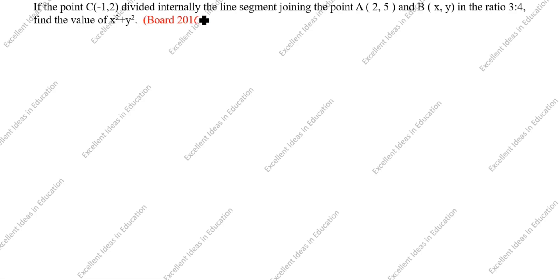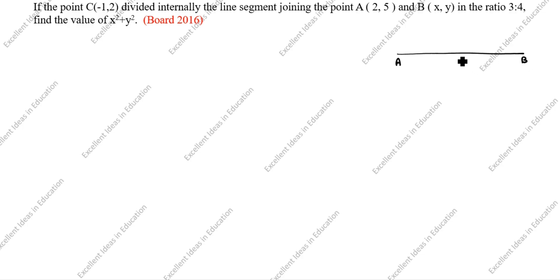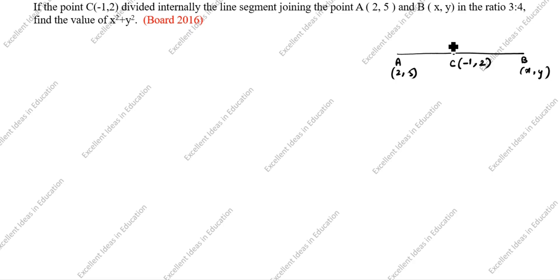In this question, 'divided internally' means C lies between A and B on the line segment. So A is here, B is here, and C(-1, 2) comes in between. A is (2, 5), B is (X, Y), in the ratio 3:4 — so this side is 3 and that side is 4.